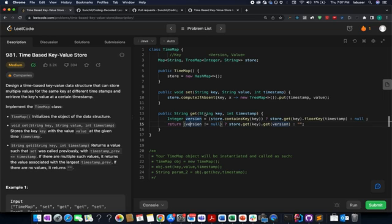The problem that we have today is Time Based Key-Value Store. This is a design level question, slightly different from the regular DSA problems that we solve. Here in this question we need to implement the TimeMap class. It has three helper methods: the constructor, the setter, and the getter.